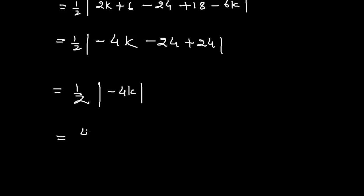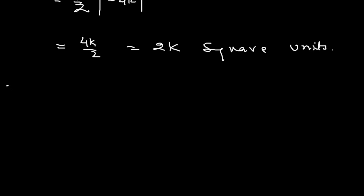This equals 4K/2, which is 2K square units. Since the points are collinear, the area of triangle ABC equals 0.